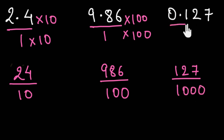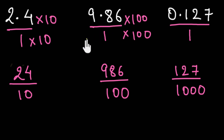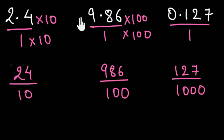So basically, we can convert any terminating decimal into its rational form by multiplying the numerator and denominator by 10 or powers of 10, depending on the number of digits after the decimal. And this would always give us a 10 or a power of 10 in the denominator. So the key takeaway is that the rational form of any terminating decimal would always have a 10 or a power of 10 in its denominator.